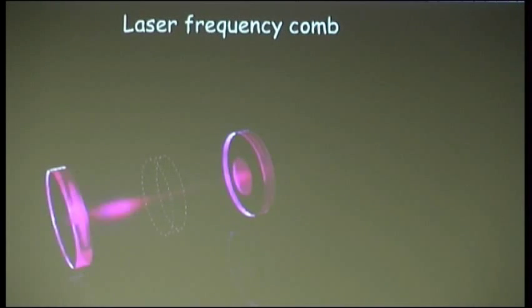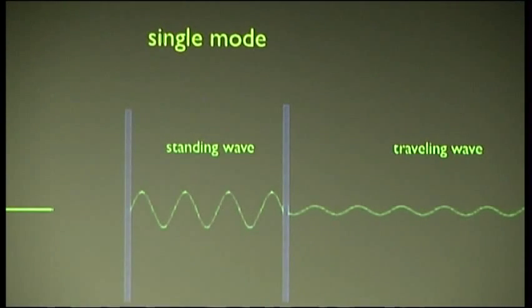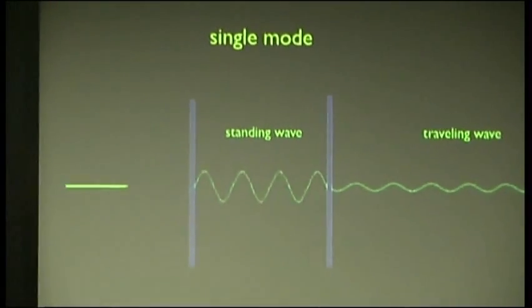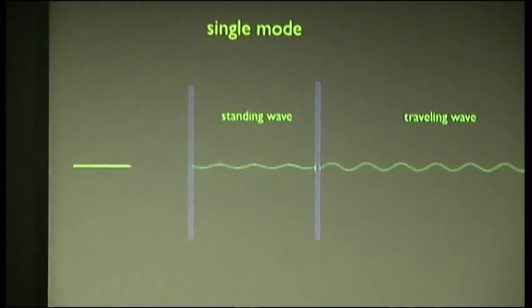So why do we call it a frequency comb? People who are interested in precision spectroscopy typically use a different type of laser. They use a single-frequency, single-mode laser. So you also have a cavity, but instead of a flash of light bouncing back and forth, you excite just one mode.